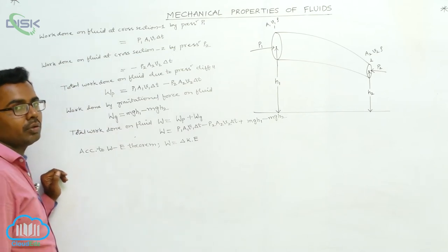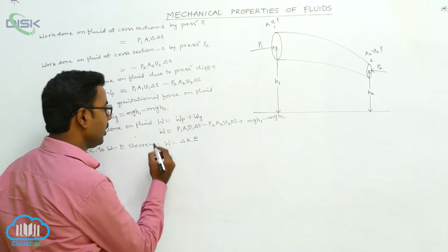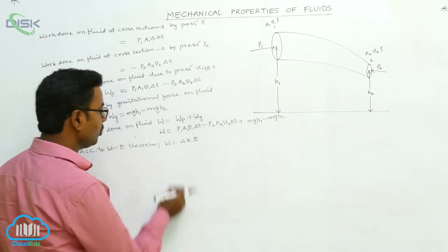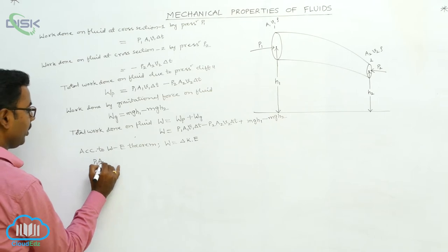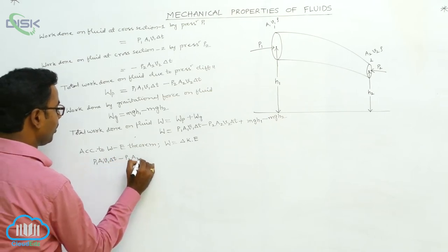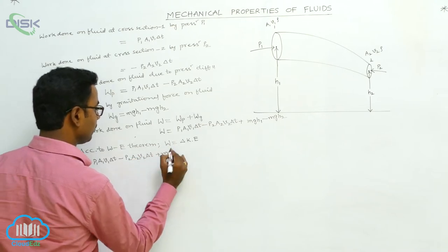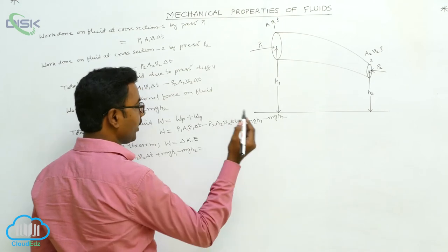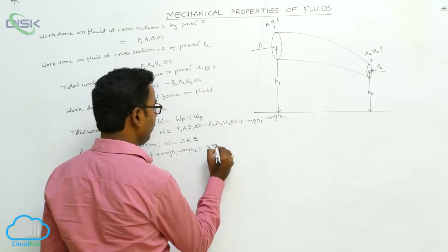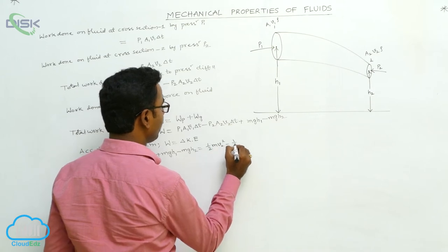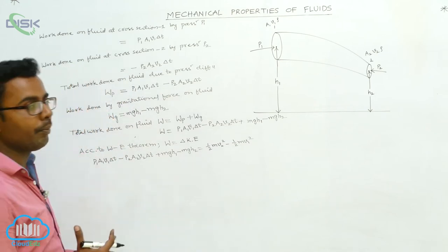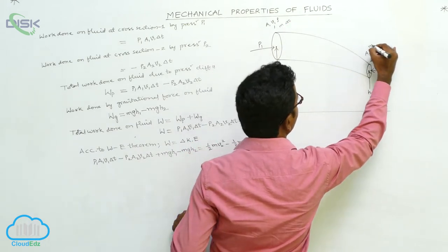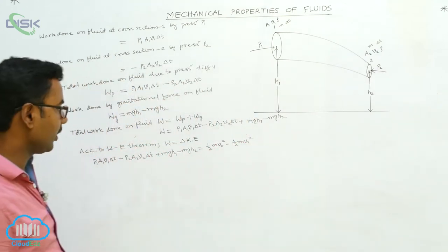Applying the work-energy theorem: P1·A1·v1·Δt − P2·A2·v2·Δt + Mgh1 − Mgh2 = half·M·v2² − half·M·v1², where the right side is the change in kinetic energy between cross-sections 2 and 1. Here M is the mass of fluid that enters at cross-section 1 and the same mass M leaves cross-section 2 in the same time interval Δt.